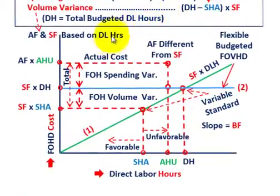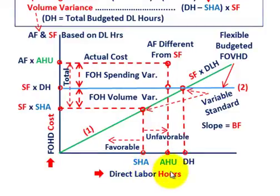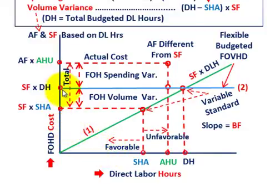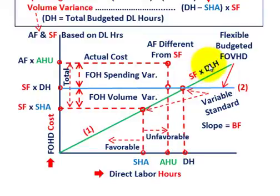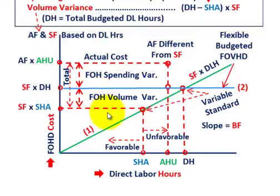Now let's lay these out on a graph. Along our x-axis we have direct labor hours — the basis for our fixed rates, both actual and standard. Along our y-axis is our fixed overhead cost. We're graphing allocation base versus cost. We have two lines established: a green upward-sloping line representing the standard fixed rate times direct labor hours — our variable standard amount — and a blue horizontal line representing the constant flexible amount, which is the standard fixed rate times the total denominator hours. That blue line doesn't change with direct labor hours.